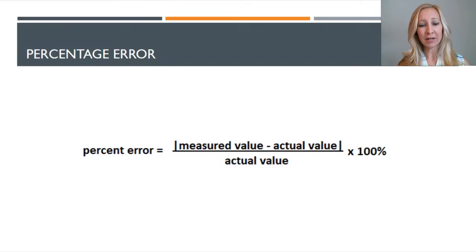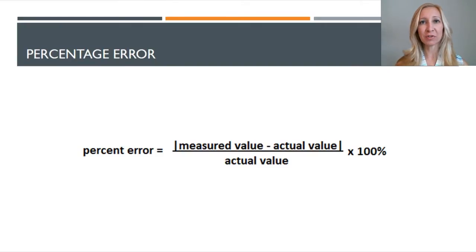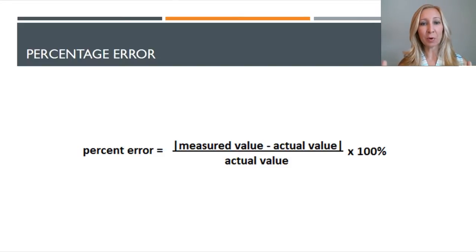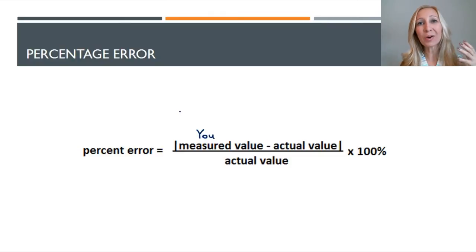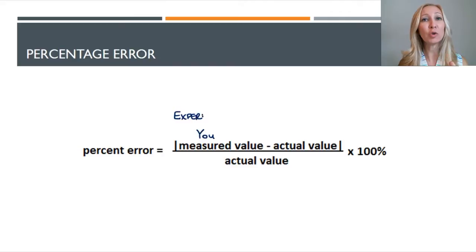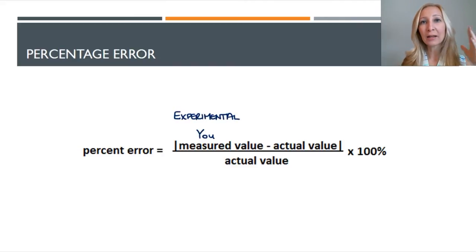Here is the equation: percent error is equal to the measured value minus the actual value in absolute value symbols, over the actual value, and we multiply by 100 to get that percentage. The measured value is what you got when you did the experiment — this is your experimental value, what you determined was the measurement. This is your measured value.